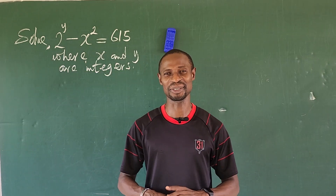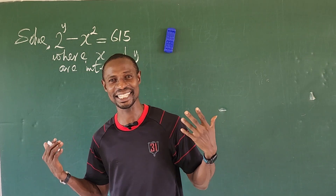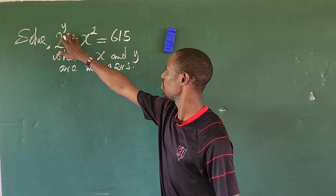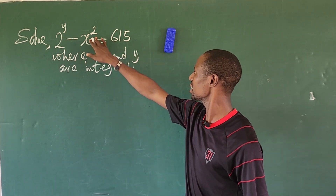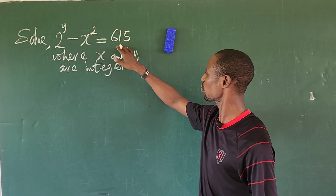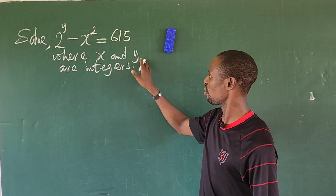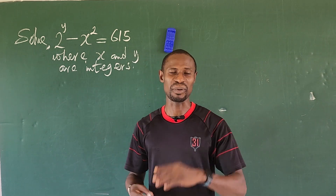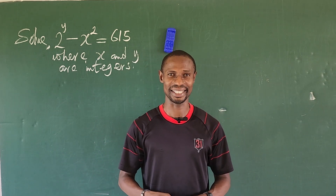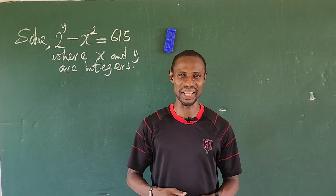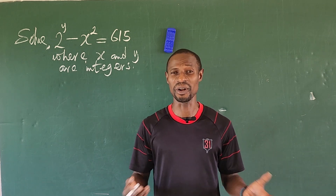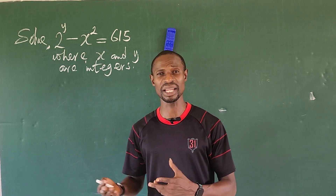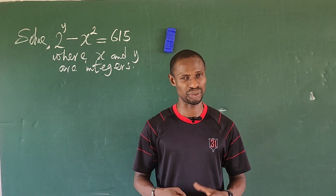Hello everyone, welcome to today's challenge. We have a very nice challenge on the board. The question is: solve 2 to the power of y minus x squared equals 615, where x and y are integers. I'll be solving this challenge collaborating with Dr. Pique, one of the best math tutors online.